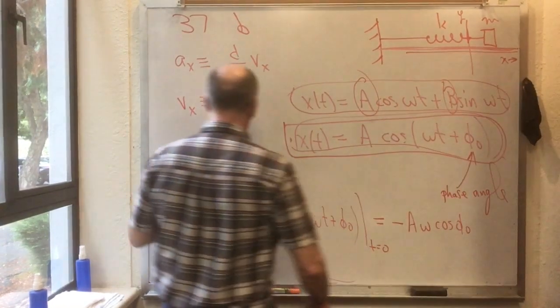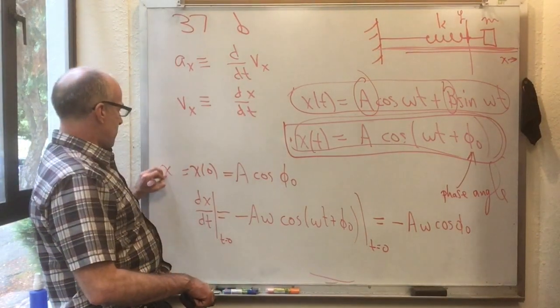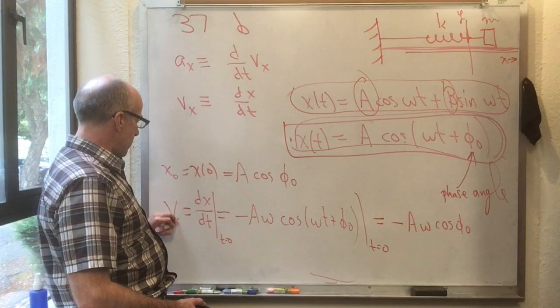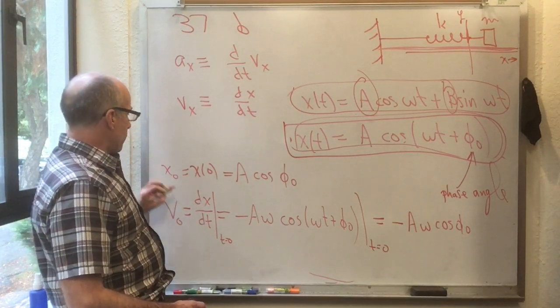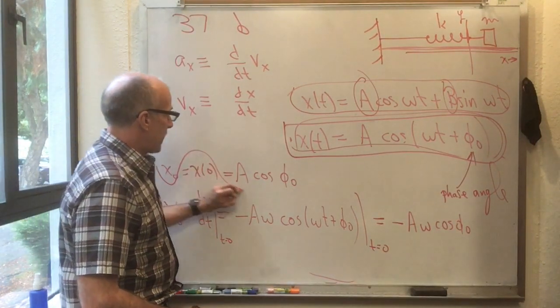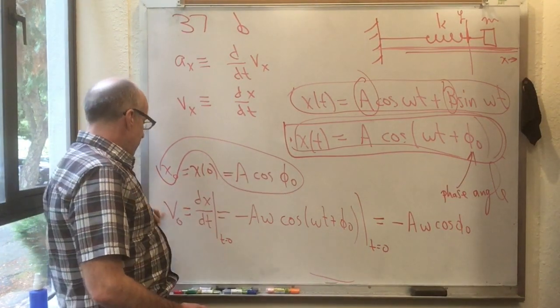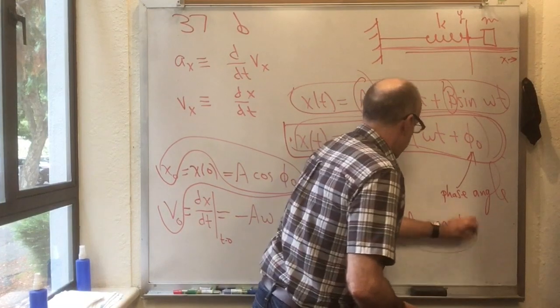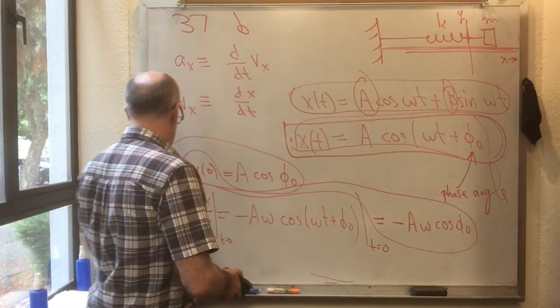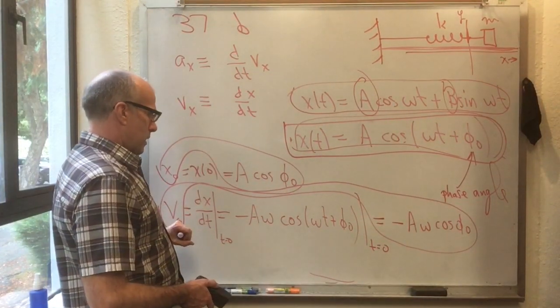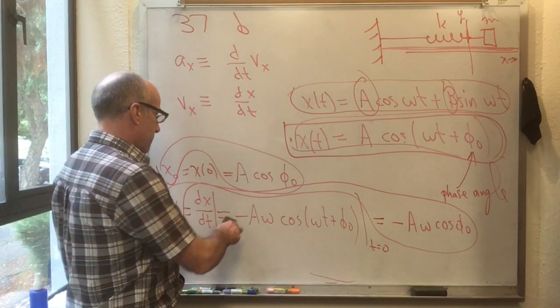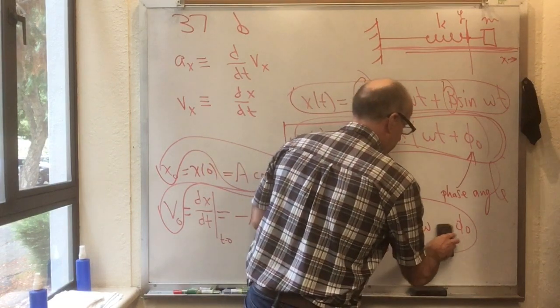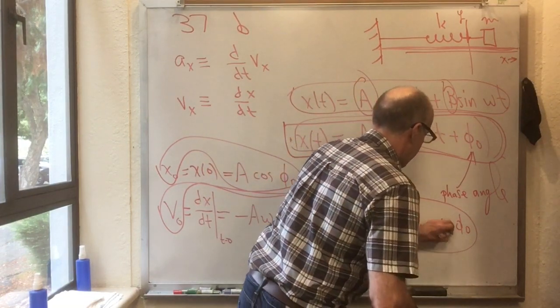And this thing, x of zero, that's worth calling x naught. And this thing, dx dt at t equals zero, that's worth calling v naught. So now we have a relationship between x naught, which is A cos phi naught, and v naught, which is minus A omega. I feel like I see a mistake. Minus A omega sine omega t plus phi. Minus A omega sine phi naught.